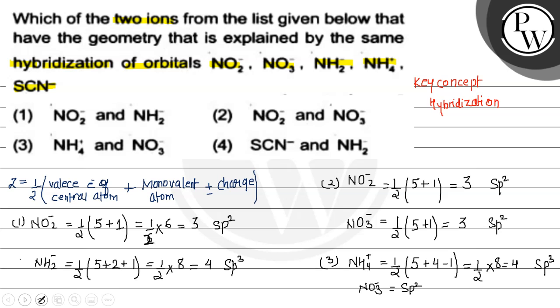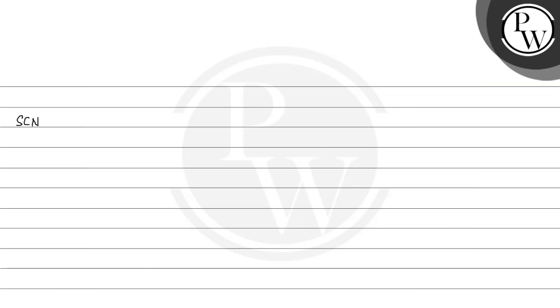The fourth option: SCN⁻ and NH₂⁻. For SCN⁻, there is a central atom, no charge, and no monovalent atoms. Its value is 2, so the hybridization of SCN⁻ is SP.